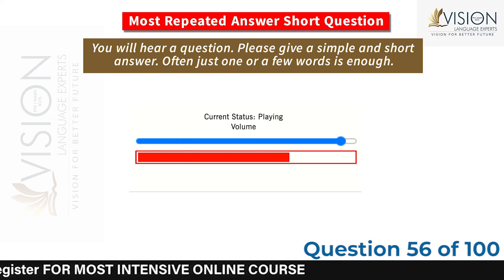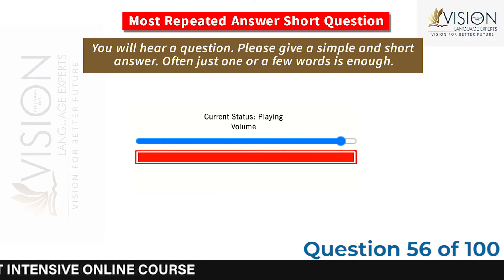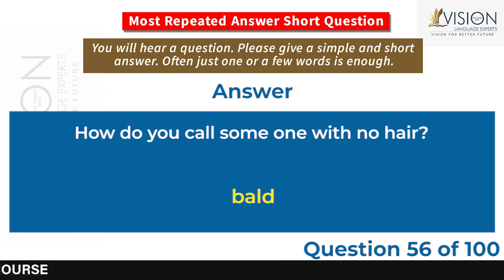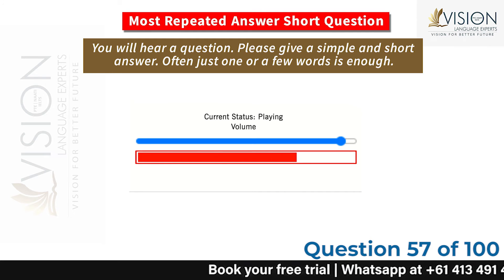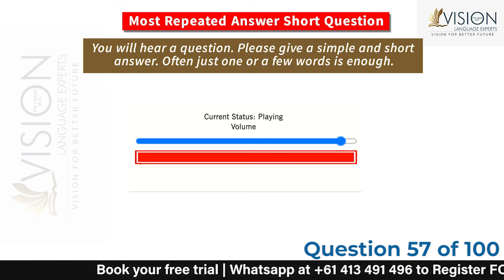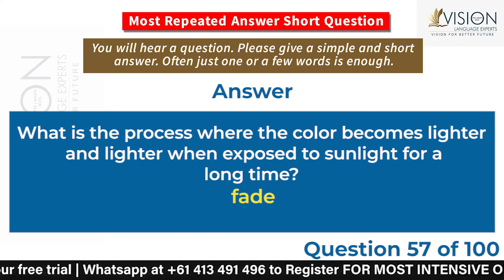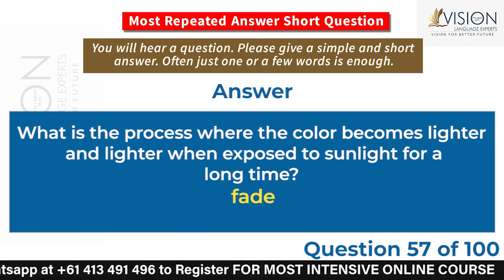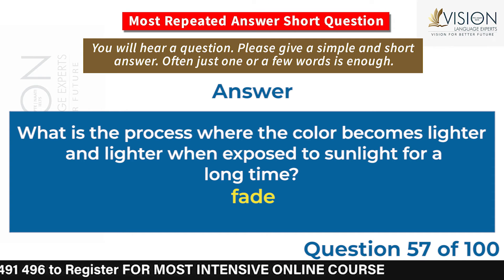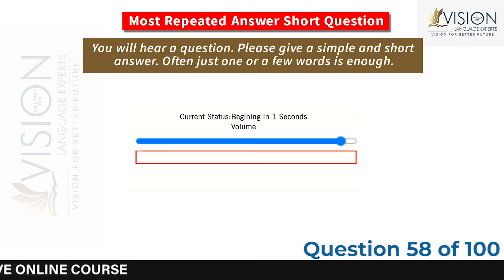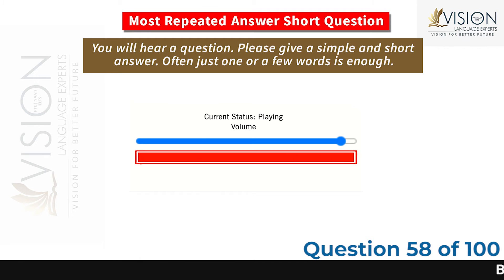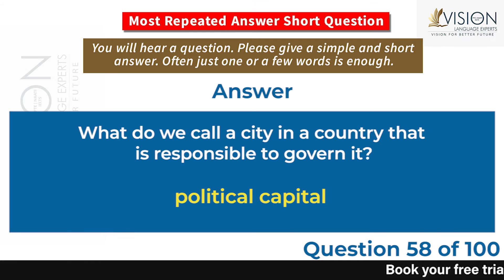How do you call someone with no hair? Bald. What is the process where the color becomes lighter and lighter when exposed to sunlight for a long time? Fade. What do we call a city in a country that is responsible to govern it? Political capital.